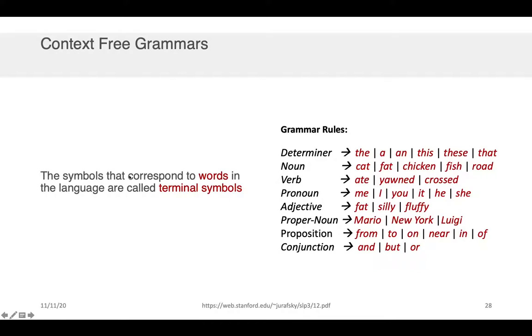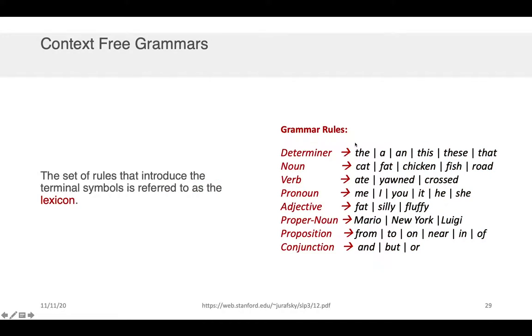Now the symbols that correspond to words in the language are called terminal symbols. So these symbols, these are the terminal symbols in the language. They're the end tokens that you might see in some data that you're analyzing. And the set of rules that introduce the terminal symbols is referred to as a lexicon.